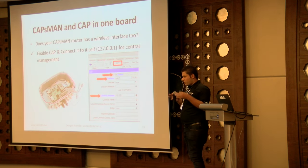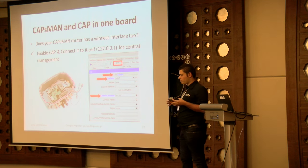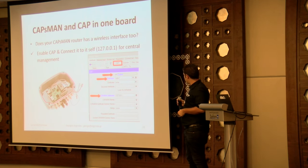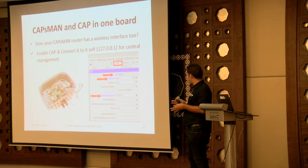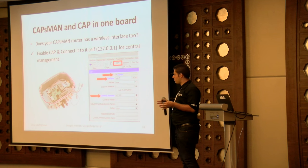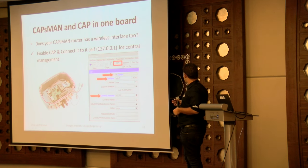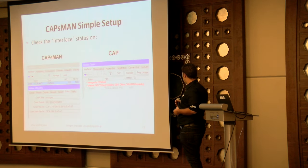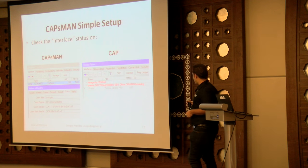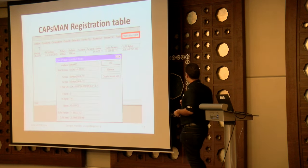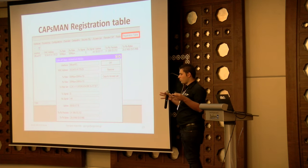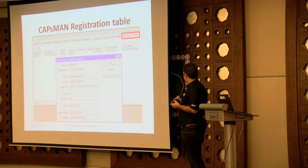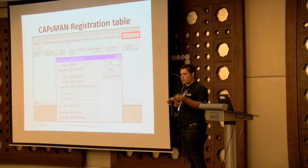We can run CAPsMAN on the same hardware as the access point. This RouterBoard has three cards for access points but also has the ability to manage other access points. To do this, we just enable the local address so it will connect to itself. For provisioning, we create rules to provision the access points. CAPsMAN will disable the wireless interface because it's managed by CAPsMAN, and in the registration table of the controller we will see all registrations — a central registration table so we don't have to check every access point.